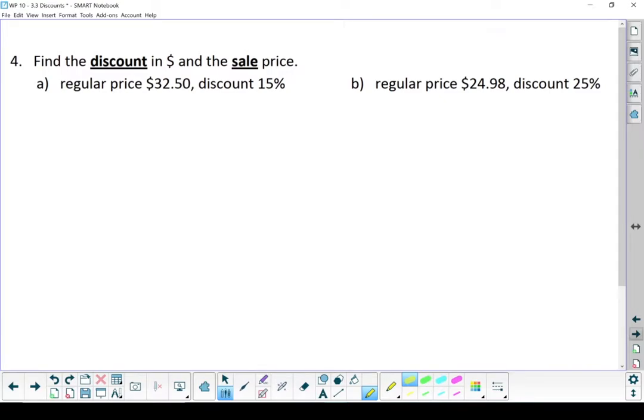All right, on this set of questions, we know our regular price and what percent our discount is. What they want us to find is how many dollars our discount is, how many dollars we're saving, and then what the sale price is going to be.